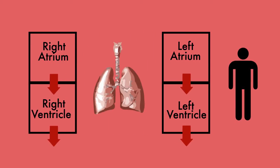In order to illustrate the flow of blood more clearly, let's follow this red blood cell through the entire circulation. First, blood flows into the right atrium, which is then pumped into the right ventricle. The right ventricle then pumps blood towards the lungs.